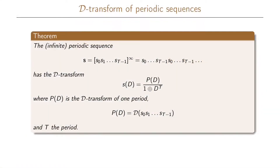A periodic sequence is a sequence that will repeat itself after t steps. So our periodic infinite sequence s0, s1, and up to s_{t-1}, which repeats to infinity, will be denoted like this. This is the sequence s0 up to s_{t-1}, then we start over by s0 and then up to s_{t-1}, and so on.